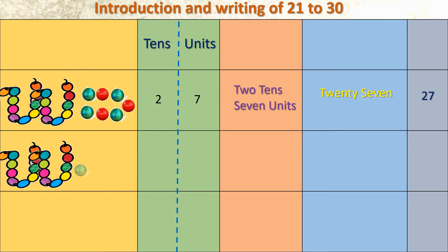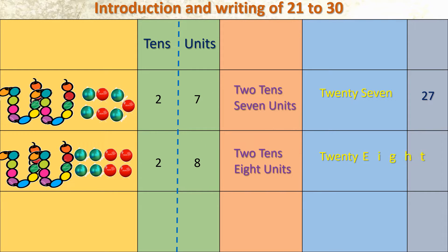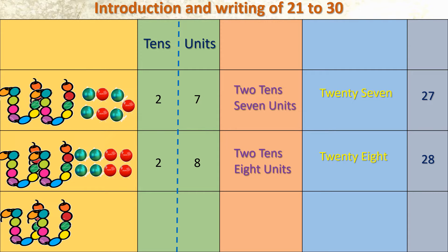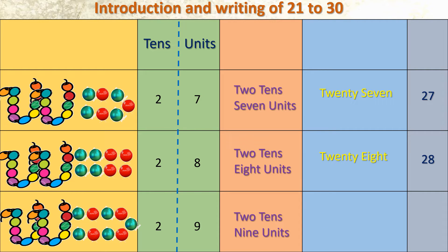We will add one more bead to the existing one. Two tens and 8 units — number is 28, numeral 20 and 8. Next: two strings of beads and singles. We are going to add one more. We got here two tens and nine units — two tens, nine units means 29.